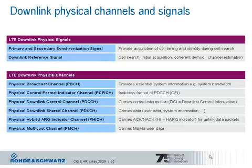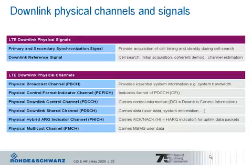These channels include, for example, the physical broadcast channel, carrying essential system information. Further, several control channels such as the physical control format indicator channel and the physical downlink control channel, which are required to inform the UE about scheduling decisions. The physical downlink shared channel is used to transport any kind of data — the obvious transport of user data to the device, but also system information or paging information.